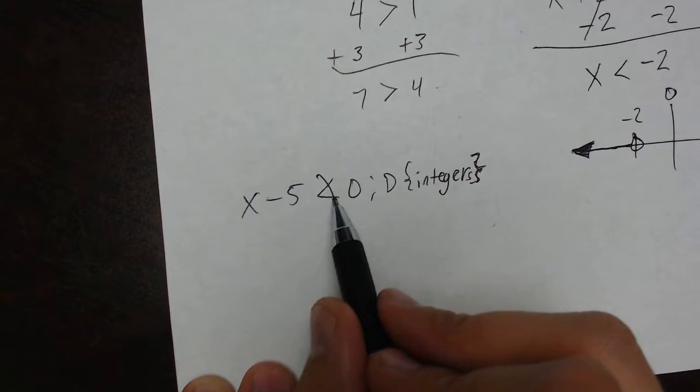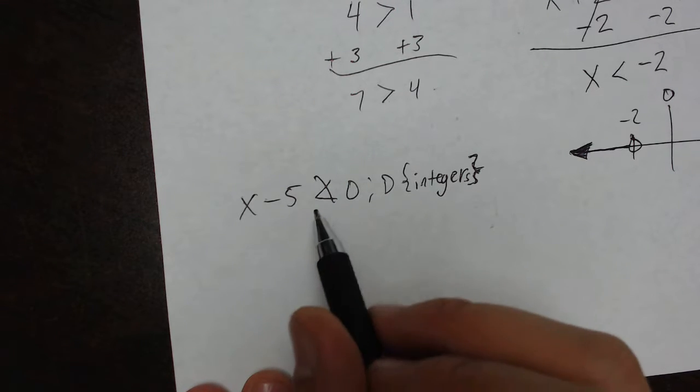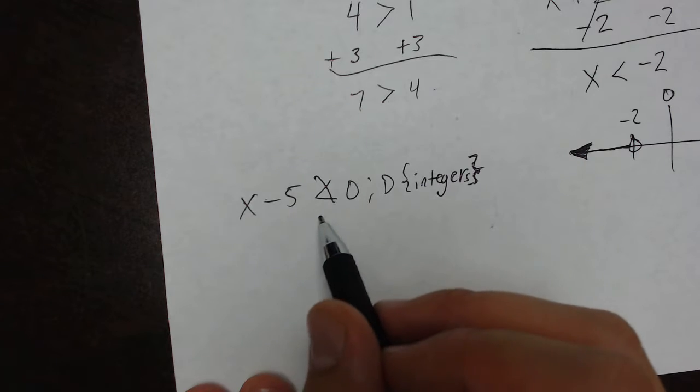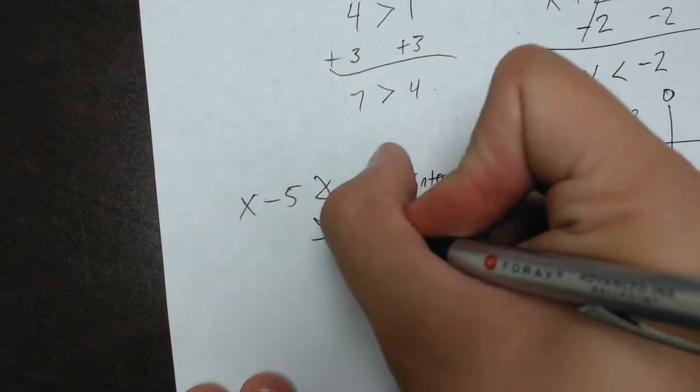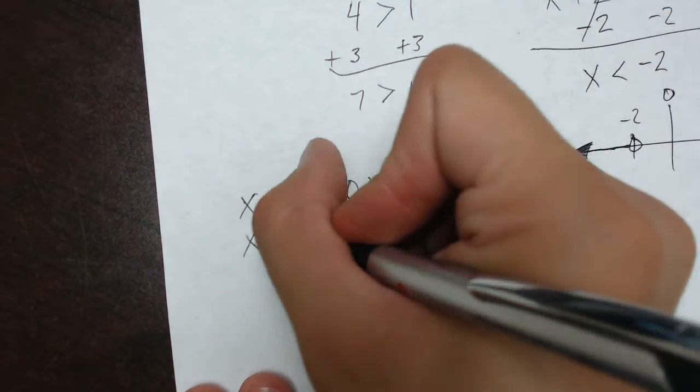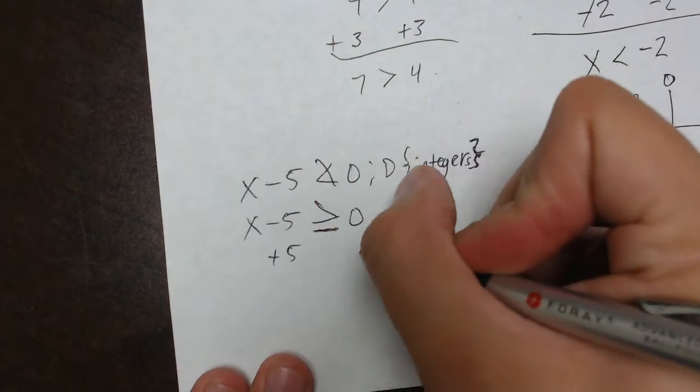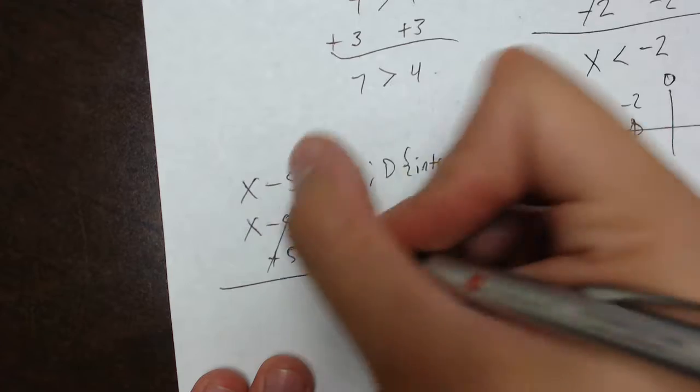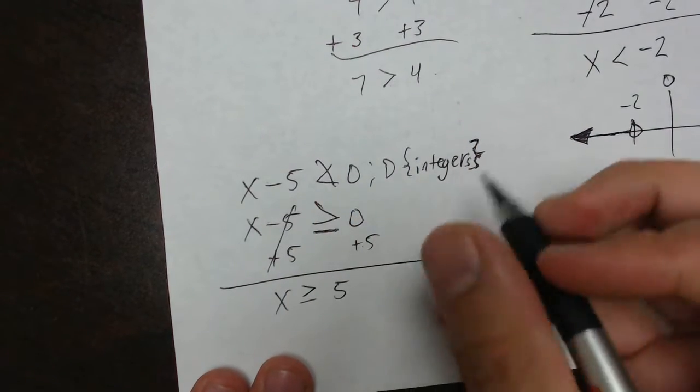So, if it's not less than, that means the other options, based on the Trichotomy axiom, are it can be greater than, or it can be equal to. So, I can say x minus 5 is greater than or equal to 0, and then I add 5 to each side. That cancels, and I get x is greater than or equal to positive 5. Now, the graph I have to hold on to is integers.